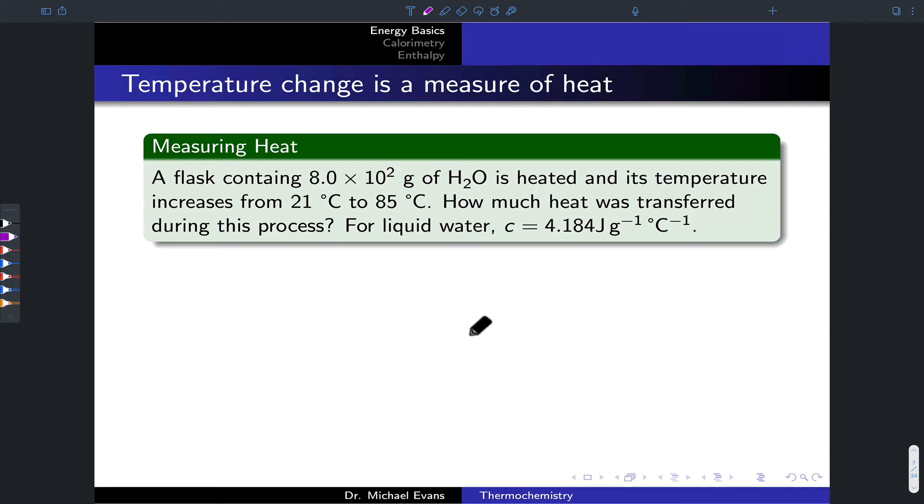Let's put our understanding of specific heat in practice by working through this practice problem. Say we've got a flask containing 800 grams of H2O, 8.0 times 10 to the second grams.